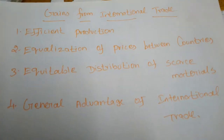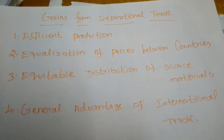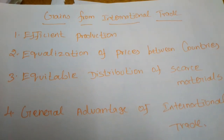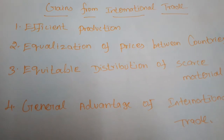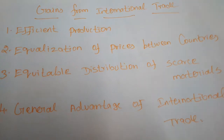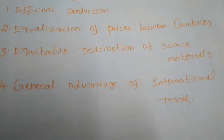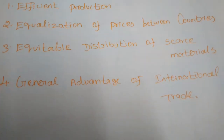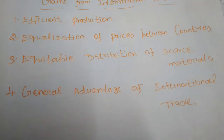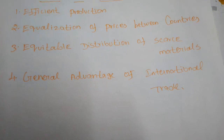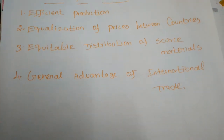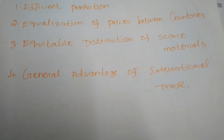Next: prices of factors of production are also equalized. When involved in international trade, factors of production can move from one place to another — from one nation to another — so all factors of production become fully employed. Next: equitable distribution of scarce materials. International trade helps trading countries have equitable distribution of scarce resources. One of the main objectives of international trade is transferring scarce resources from one nation to another.